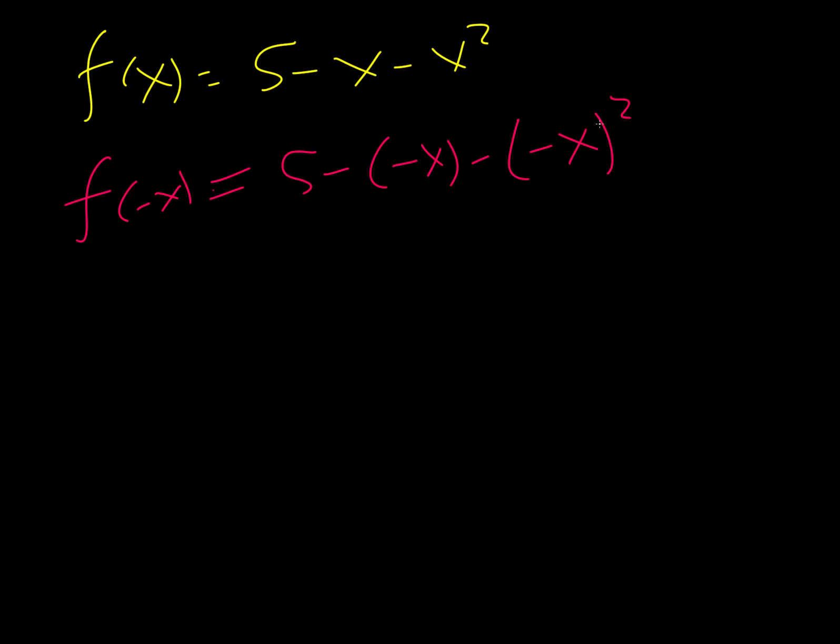So negative x squared is going to give us positive x squared. I know that's confusing, but then this negative is this negative. Now these negatives are going to become a positive. So it's 5 plus x minus x squared. And that's equal to f of negative x. So 5 plus x minus x squared. That's kind of weird, huh?